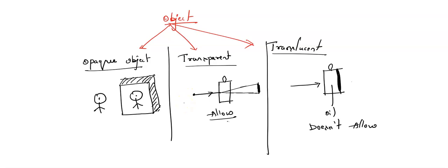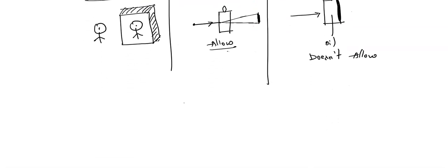So, to summarize the three types: in an opaque object, we can see our own image. In a transparent object, it allows light to pass through. In a translucent object, the light will not move through it. These are the three different types of objects.